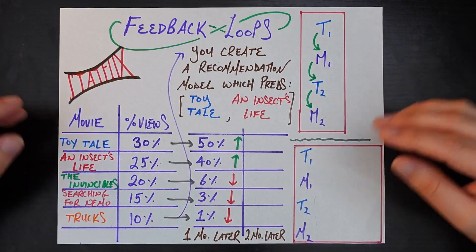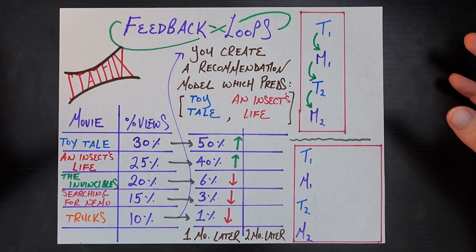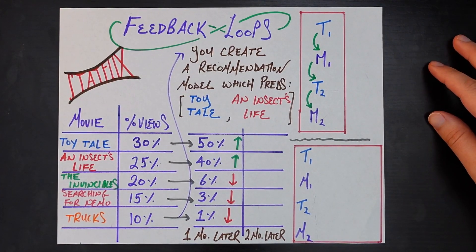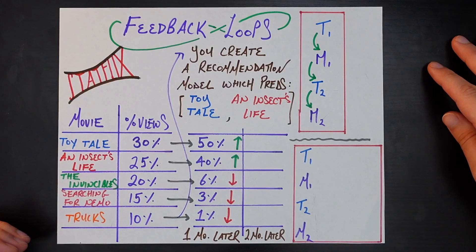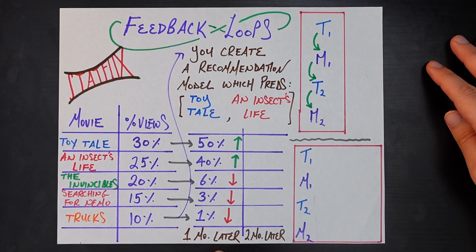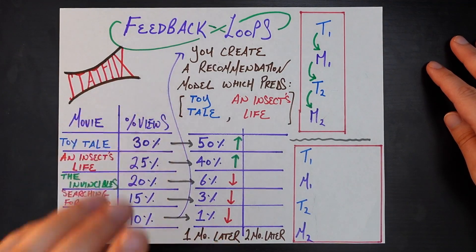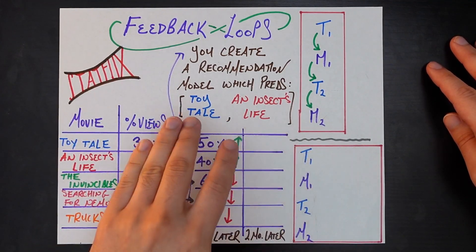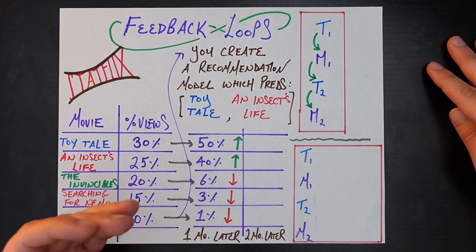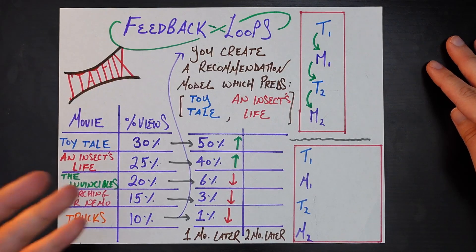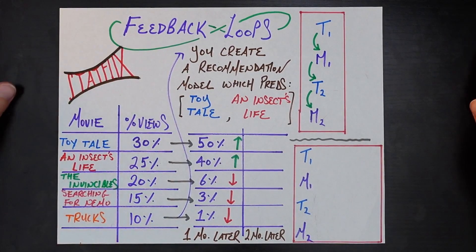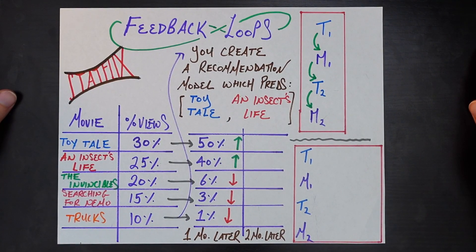Now you've released your model — let's think about one month later, what might happen to this distribution of percent of views for these five movies. Well, your model is now actively recommending those first two movies, so it makes total sense for the share of views for those movies to go up, and the share of views for the other movies — which your model is not actively recommending — to go down. And that's exactly what we see.